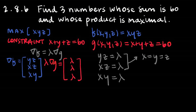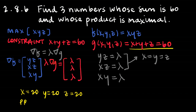In the case where one of them is 0, all of them would be 0 and the gradients are 0, which isn't a situation we're interested in. So x = y = z. Going back to the constraint: x + x + x = 60, meaning x = 20. So x = 20, y = 20, z = 20, and the maximum product is 20 × 20 × 20 = 8,000.